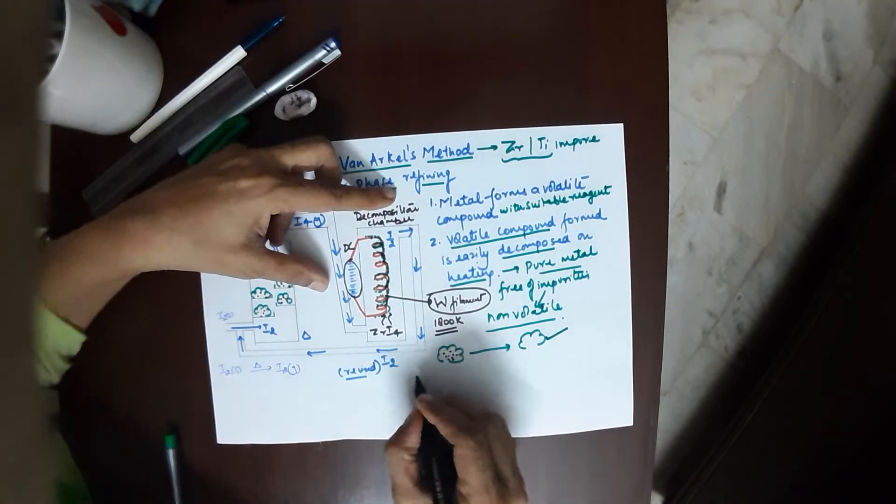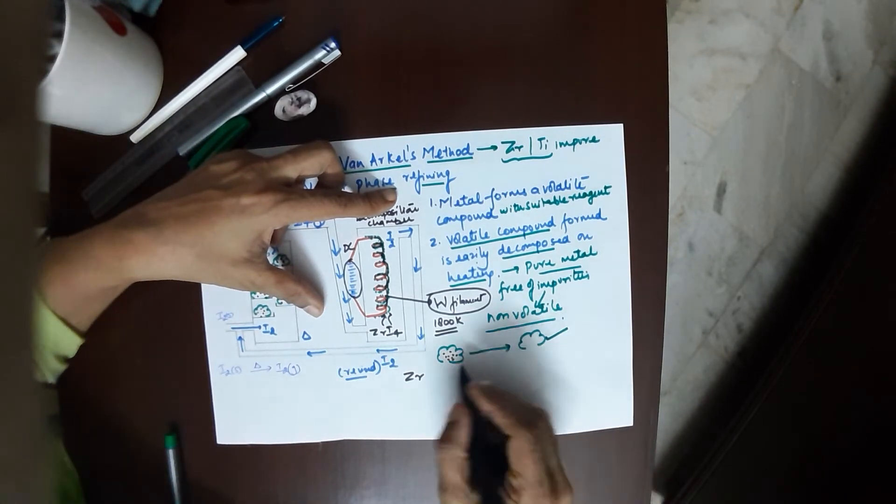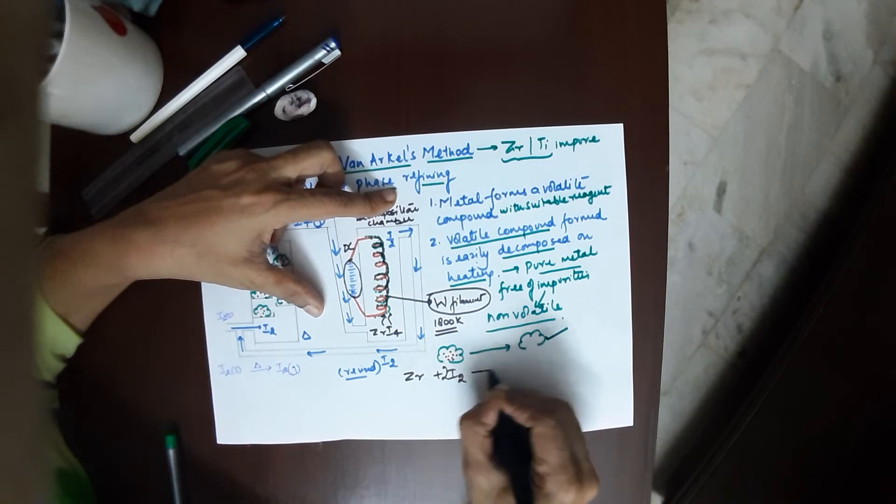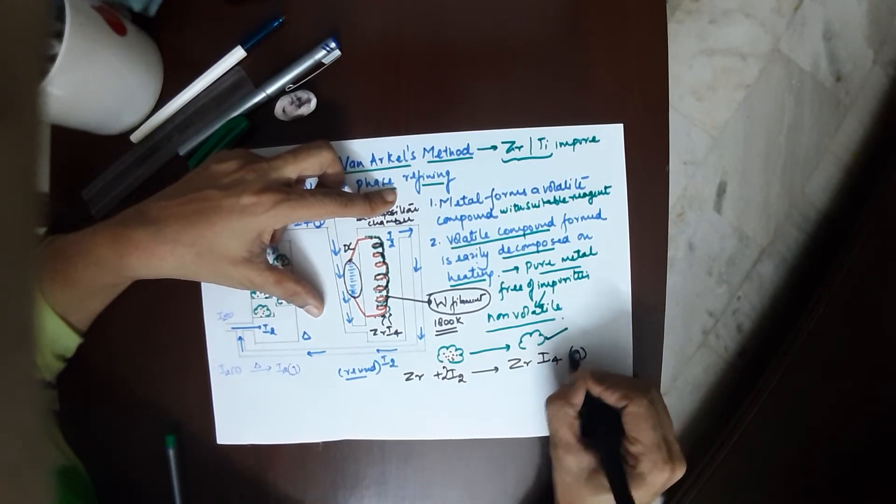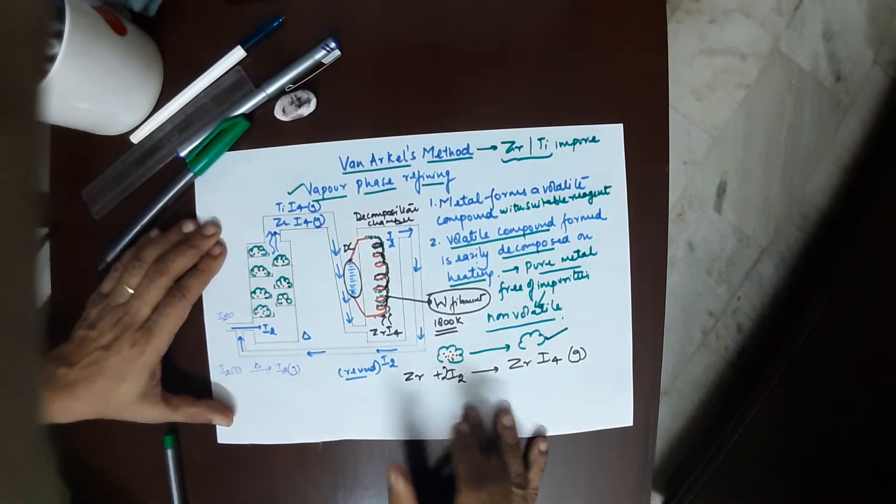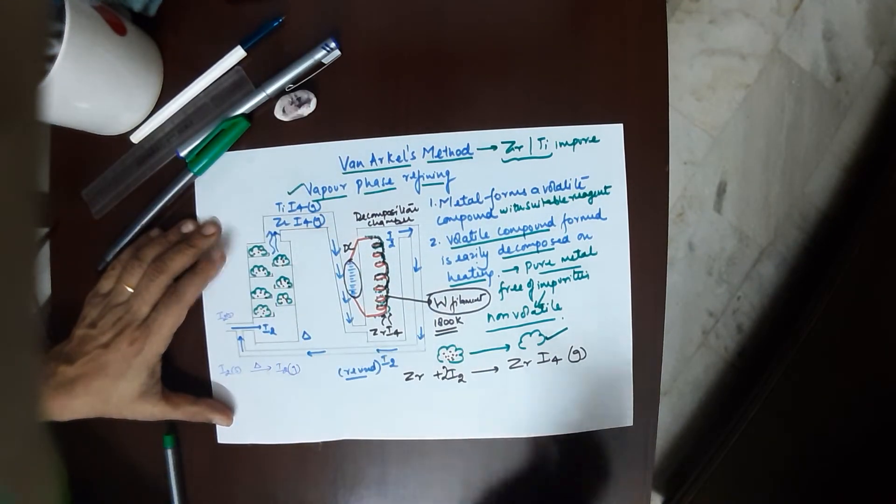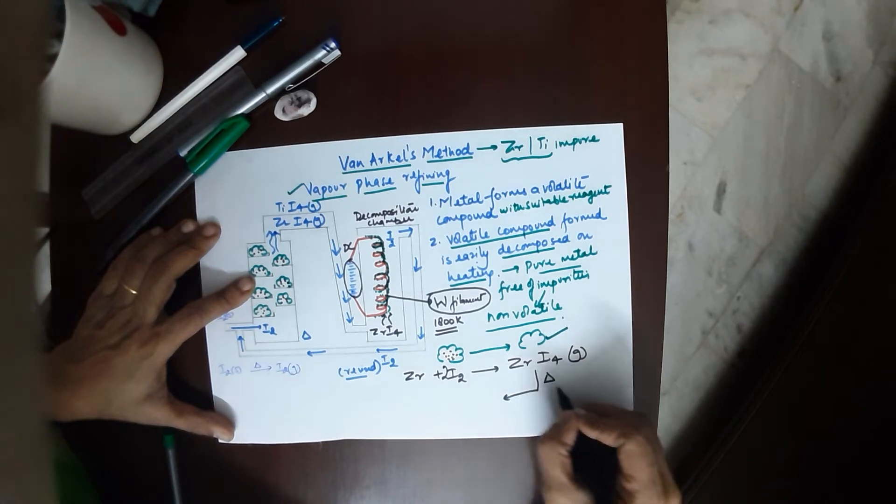I'm doing it with zirconium; you can do the same with titanium also. Zirconium reacts with iodine, 2 moles, to lead to the formation of zirconium tetraiodide, which is a gas, a volatile compound. Your volatile compound travels to the second chamber.